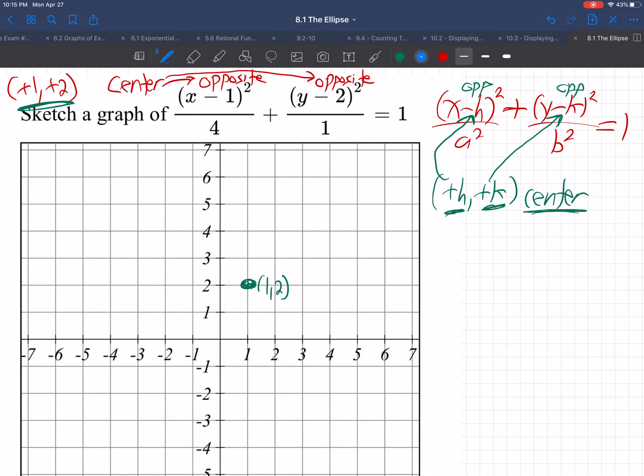And then from there, whatever's underneath x, remember you rewrite that as a square, and 1 is just 1 squared. And whatever's underneath x, that's always right, left. So that'll be right 2 from the center and left 2 from the center. And whatever's underneath y is up 1 and down 1 from the center.